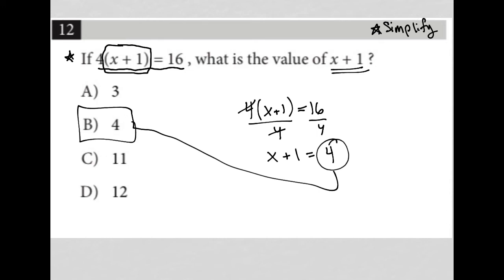Had you not noticed that, there are other things you can do. You could distribute the 4 across the parentheses and do all the normal stuff. You would just have to make sure that you added 1, because if you don't add 1 to the x, you'd end up with 3 as an answer. So just be careful.